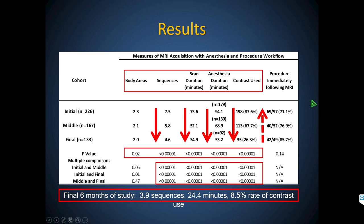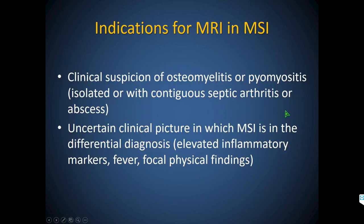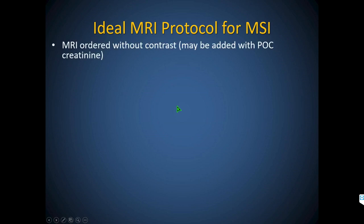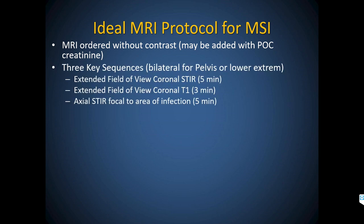I believe these are the only indications for MRI in a child suspected to have musculoskeletal infection: whenever there's clinical suspicion of a bone or muscle infection — whether isolated or with contiguous infections like septic arthritis or abscess — it's appropriate to get an MRI to establish anatomic and spatial orientation of the infection and assess for things indicating surgery. Also appropriate when there's an uncertain clinical picture with elevated inflammatory markers, fever, and focal physical findings.